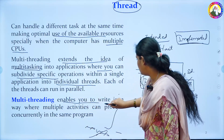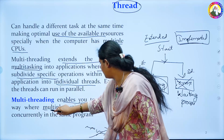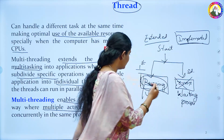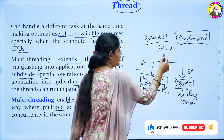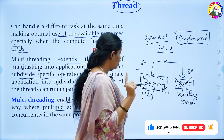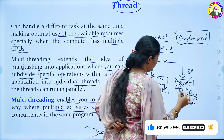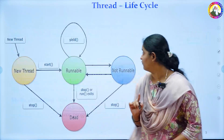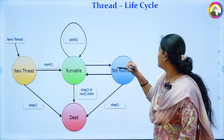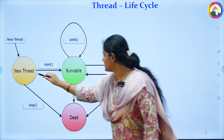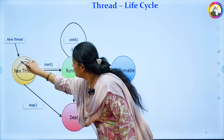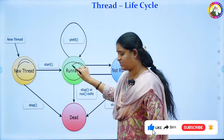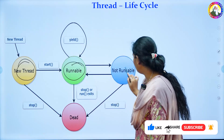It enables you to write in a way where multiple activities can proceed. As I said earlier, you are starting a program to run it. One can be in a runnable phase, the other can be in a waiting process, as you can see in the architecture or life cycle of it. This is the life cycle of the thread where you are starting a new thread — either it can be in a runnable state or it can be not runnable.